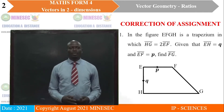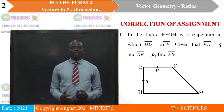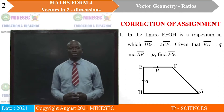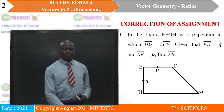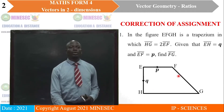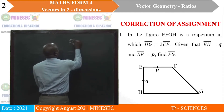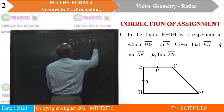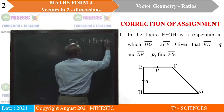Question 1. In the figure, EFGH is a trapezium in which HG is equal to 3EF. Given that vector EH is equal to Q and vector EF is equal to P, find FG. So, look at the diagram. We are looking for vector FG. Vector FG is the same as we move from F to E, from E to H, and from H to G. We've arrived at G.